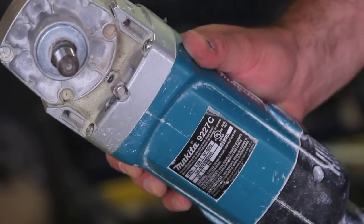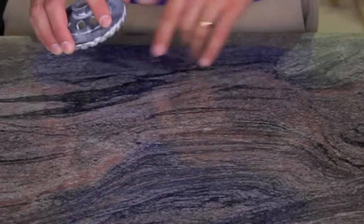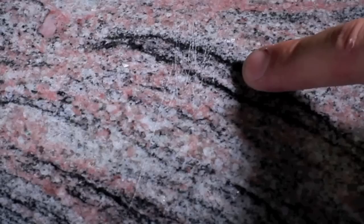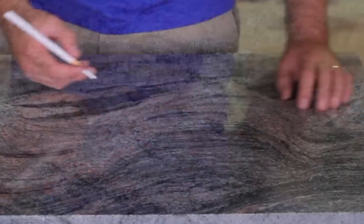The Makita 9227C is the machine of choice for this procedure. For this video we're going to remove a scratch. Start by marking out your area so you know where to start.